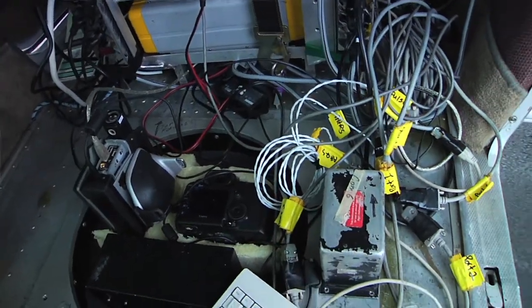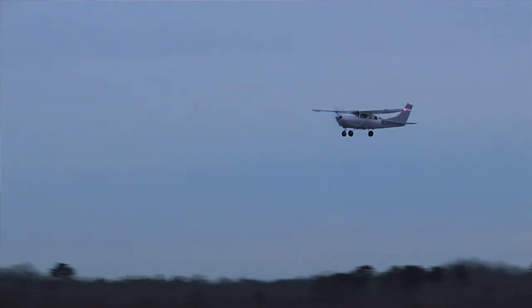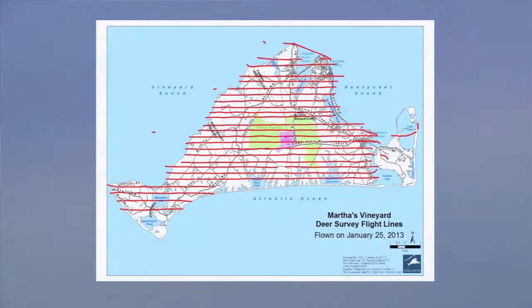From our experience doing this for a long time, in situations where organisms are uniformly distributed, if you get a 20% sample you'll be just fine. We're going to fly Chappaquiddick at a 50% sample because it's a more challenging environment — it's got a lot more conifers for the deer to hide in. But generally, anywhere from 20 to 25% is all you ever need.